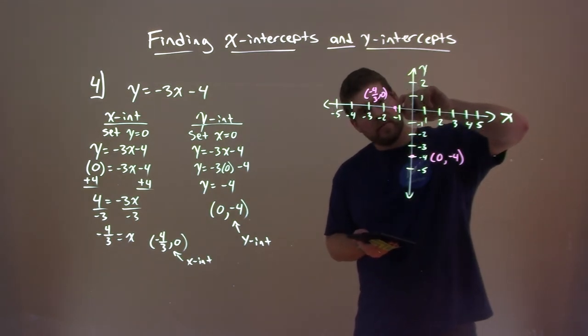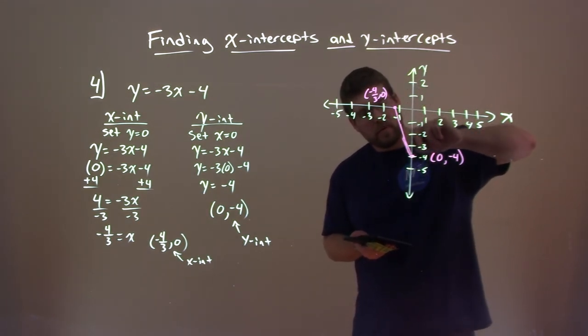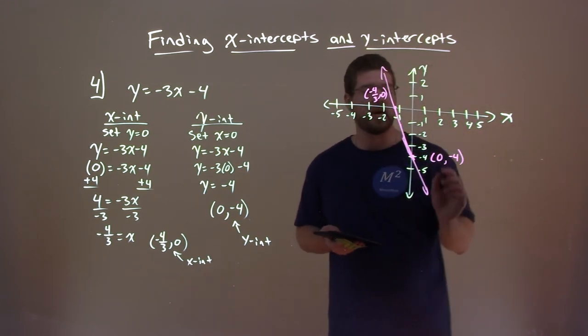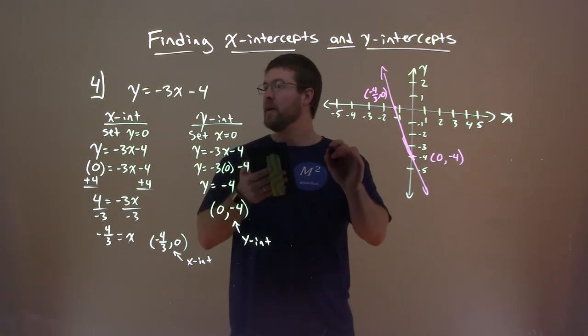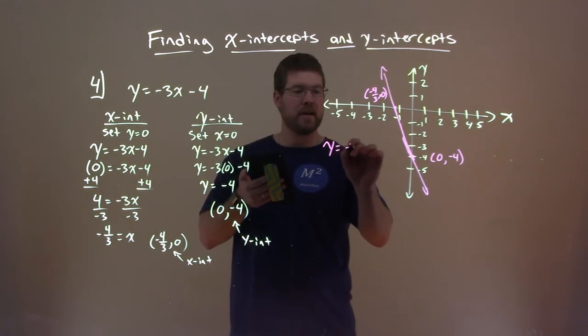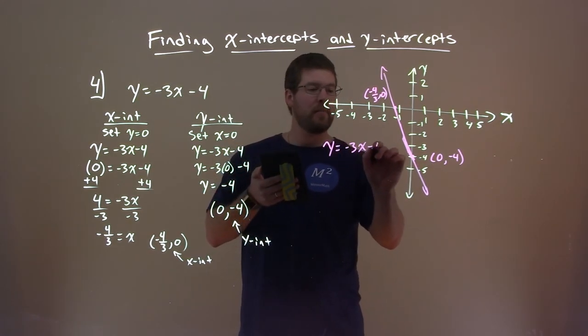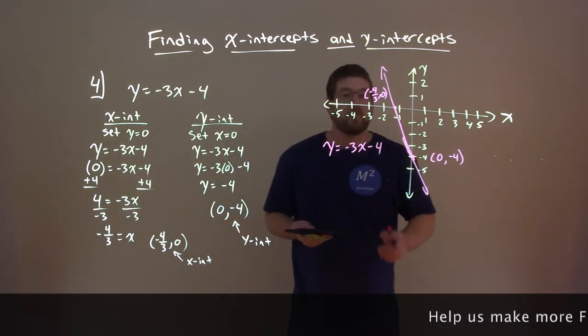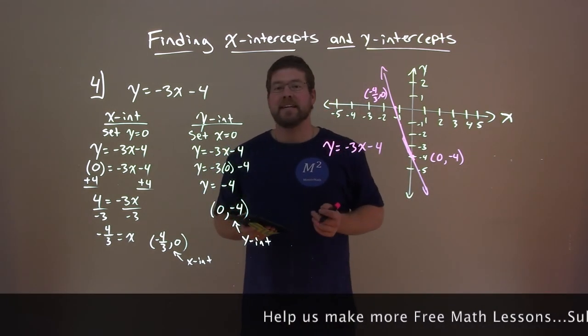And then, all we need to do now is connect these two dots to make a line. And, let's see if I can do it. Not the prettiest, but it works. We have y equals, our line, y equals negative 3x minus 4. And now, we've graphed it using our intercepts here.